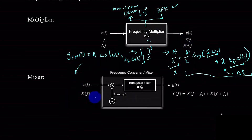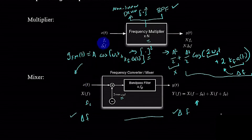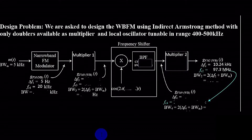Compare this with the mixer: if we have f_c, it will be converted to f_c − f₀ and f_c + f₀, but the frequency deviation is not changed — it remains the same. So in multipliers, both the carrier frequency and the deviation are multiplied by n, whereas in the mixer only the carrier frequency is shifted but the frequency deviation is unchanged. Next we have an example that we will consider in the generation of wideband FM, which is going to clarify a number of these concepts.